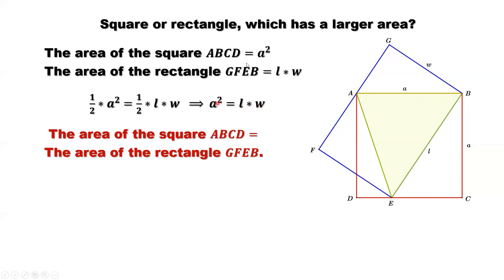What is A squared? A squared equals the area of the square. L times W is the area of the rectangle. Here is the conclusion. The area of the square equals the area of the rectangle.